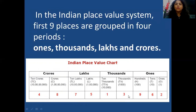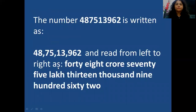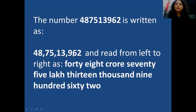Now look at the number given below: 4, 8, 7, 5, 1, 3, 9, 6, 2. How will we read this number? First, before reading the number, we have to separate it based on the periods. In the ones period we have 1s, 10s, and 100s — so after 3 digits we put a comma. In the thousands period we have thousands and ten thousands — so after 2 more digits we put a comma. In the lakhs period we have lakhs and ten lakhs — so after 2 more digits we put a comma. After placing the commas, we read the number from left to right as 48,75,13,962. Are you clear about it?